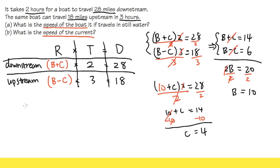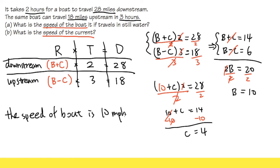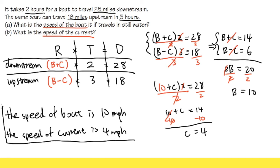The speed of the boat is 10 miles per hour, and the speed of the current is 4 miles per hour. Hopefully this video helps. You should definitely practice more of these types of questions and use the strategy shown throughout these two examples. As long as you put in the effort, you can do it too.